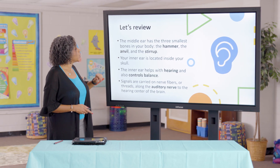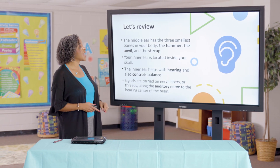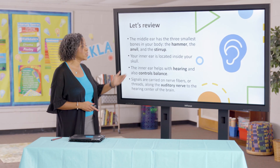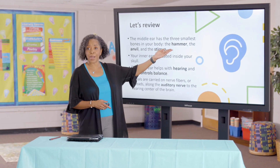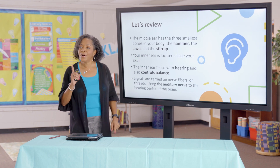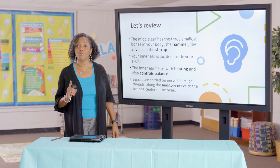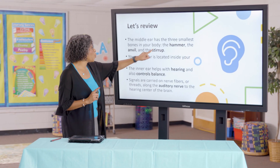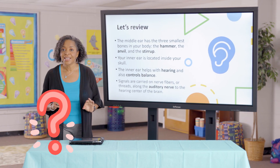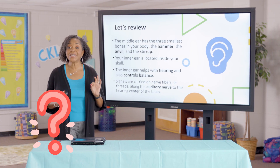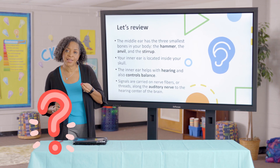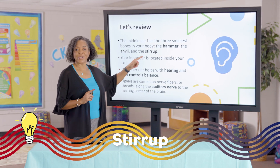We learned that the middle ear has the three smallest bones in your body. What are they called? The hammer, the anvil, and the stirrup. Bonus question: does anyone remember which of those three is the smallest? It's about the size of a grain of rice. It is the stirrup.